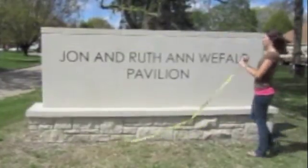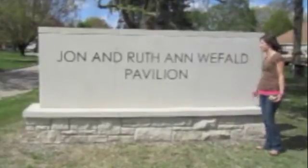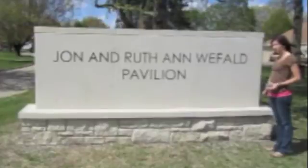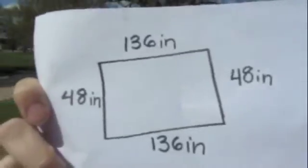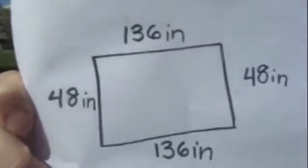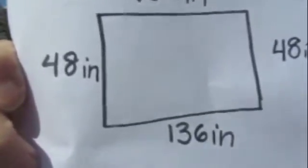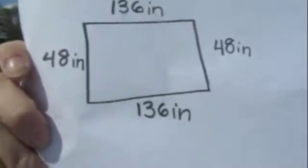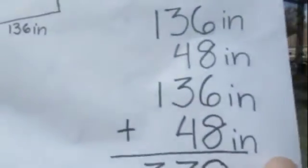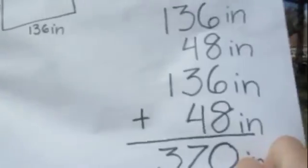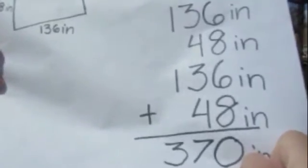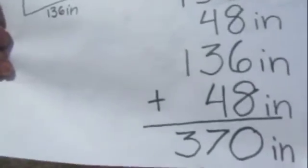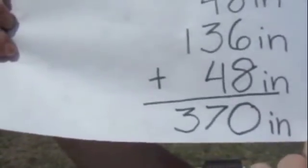And we know already that this side is going to be the same as that side. So, this side is going to be 48 inches tall. To find the perimeter of this shape, we're going to add up all the sides. If we add up 136 plus 48 plus 136 plus 48 again, we get 370 inches. That would be the perimeter of this sign.